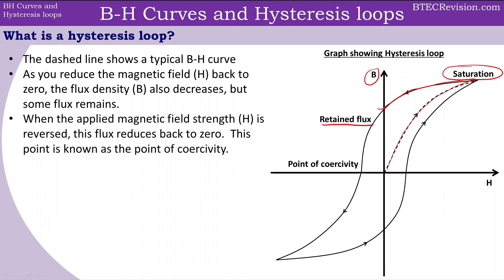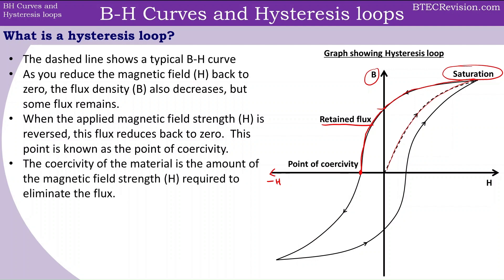Next, we can look at reversing the H value — the magnetic field strength. In this region on the graph we have negative H, which represents H applied in the opposite direction. When this applied magnetic field strength is reversed, the flux reduces back down to zero. Carrying on following the line on the graph, you reach this point, which is known as the point of coercivity. The coercivity of the material is the amount of magnetic field strength required to eliminate this retained flux.